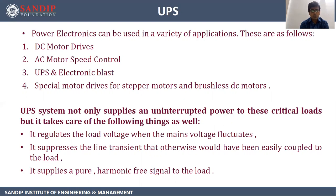A UPS system not only supplies an uninterruptable power to critical loads but it also takes care of the following things: it regulates the load voltage when the main voltage fluctuates, it suppresses the line transients that otherwise would have been coupled to the load, and it supplies a pure harmonic-free signal to the load.